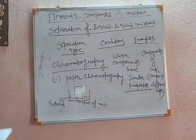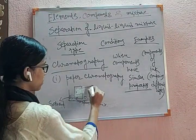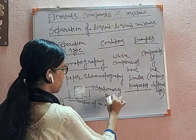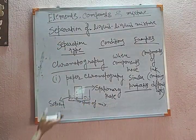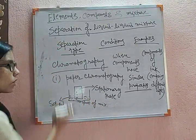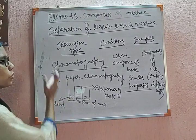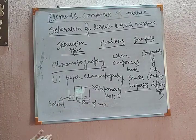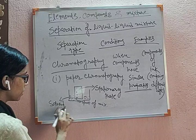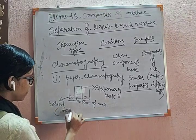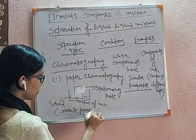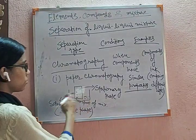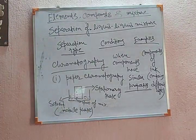This paper is known as the stationary phase — it is fixed. What is moving here is the solvent. The solvent moves upward, and with the solvent the liquid mixture also moves upward. So the solvent is the mobile phase and the paper is the stationary phase. The container where the solvent is taken is known as the solvent chamber.